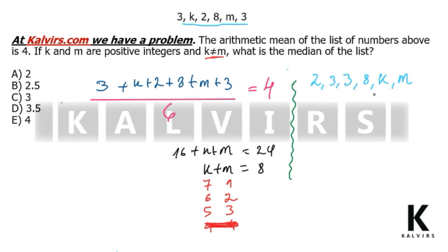If we put 7 and 1, the middle terms would be 3 and 3, and then the median should be 3. If we put 6 and 2, again, the median numbers or the central numbers are 3 and 3, so the median in an equal way that the previous case is equal to 3.